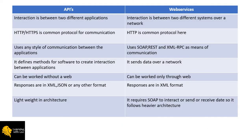Both APIs and web services provide or establish communication between two different applications or systems in a network. In APIs, we use HTTP or HTTPS as a common protocol for communication, whereas in web services we use HTTP as the common protocol.